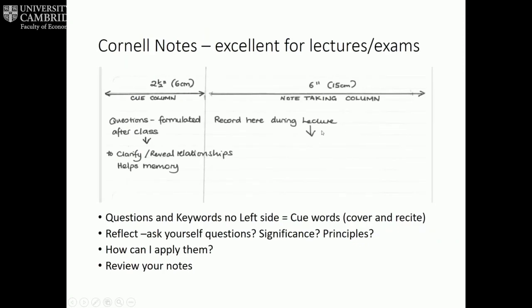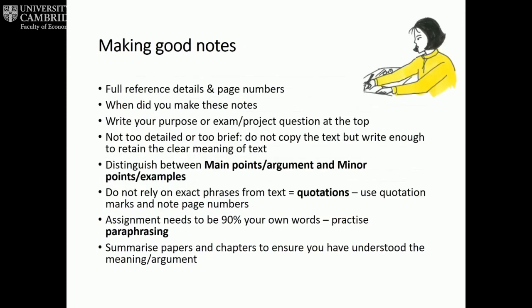One approach you may find useful is the Cornell note-taking method — it's really meant for lectures or exam revision. You divide your paper with two-thirds for taking notes, and later when you review those notes, you write your reflections and questions on the left margin. It helps bring things down into more succinct, summarized bits of information. Do put down full references of what the journal article is and where it's from — full details and page numbers, because you're going to need that information to do the referencing. Write your purpose or key words at the top so you keep your mind focused.